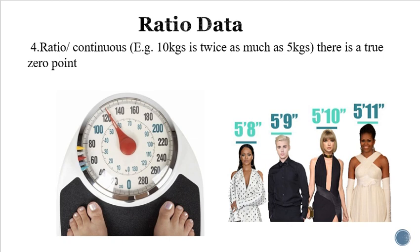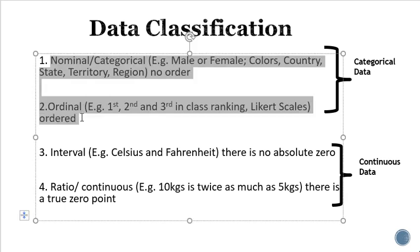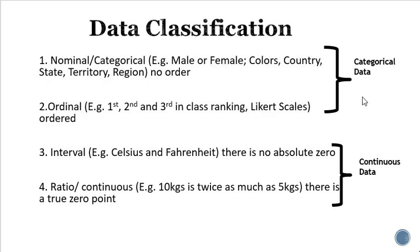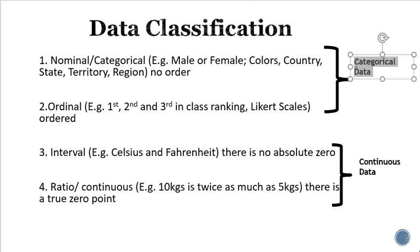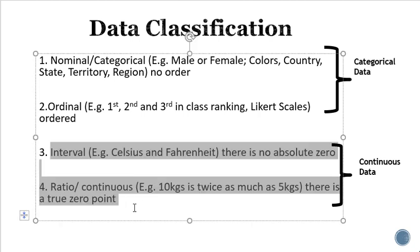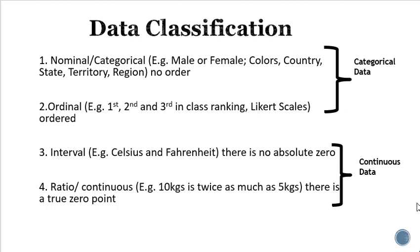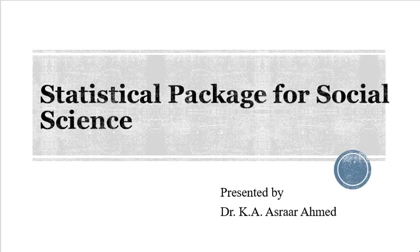One more thing to understand: nominal and ordinal data are broadly called categorical data, while interval and ratio data are broadly called continuous data in statistical terms. I hope you liked the video. Thank you.